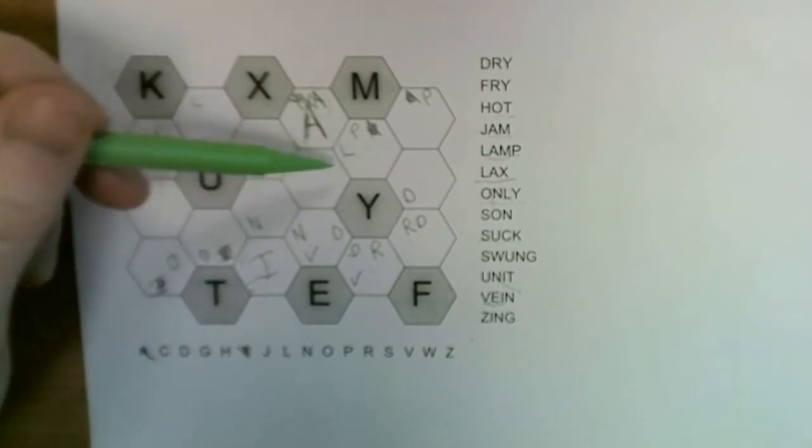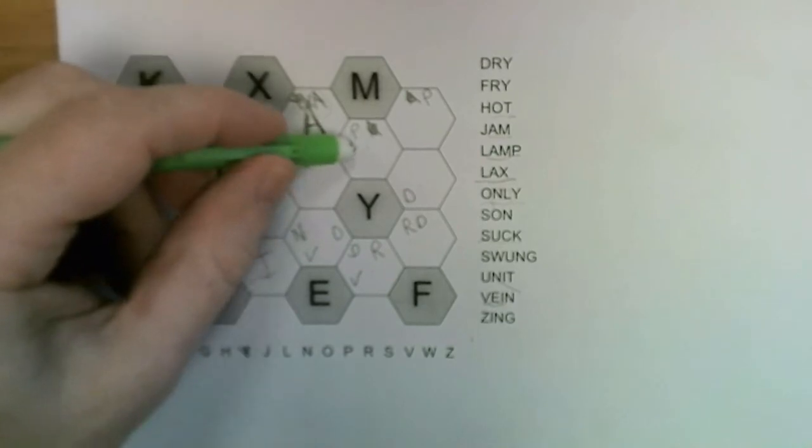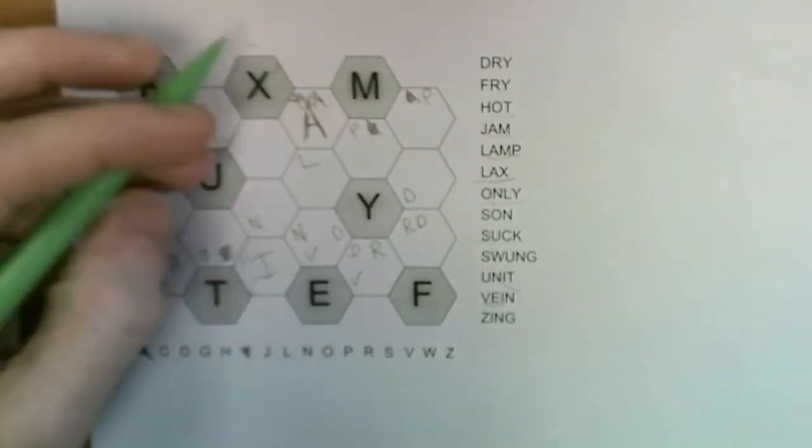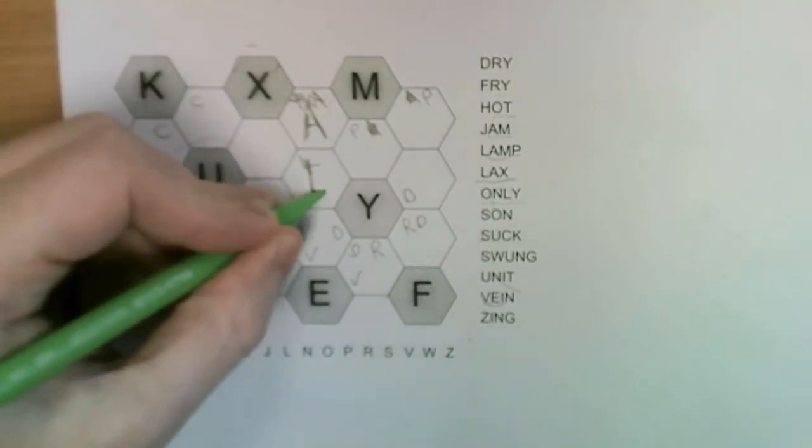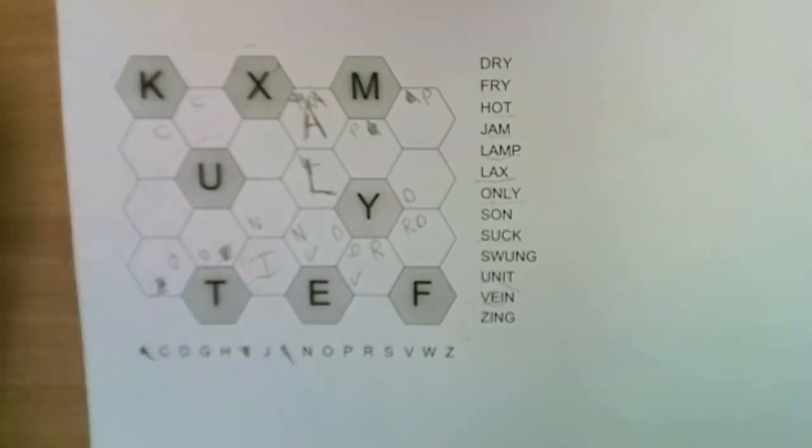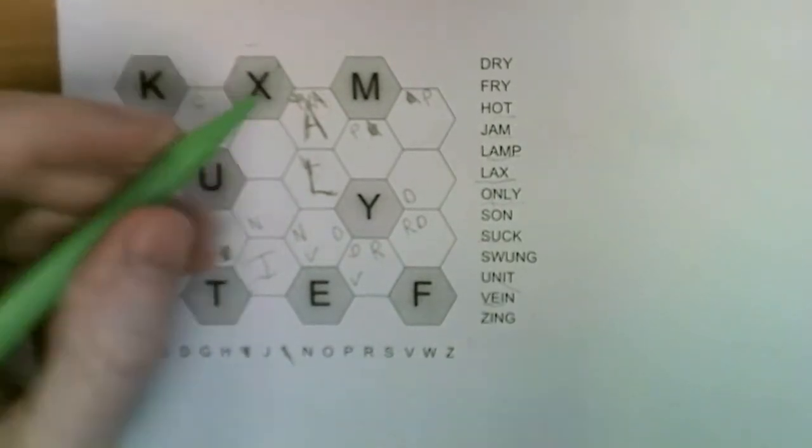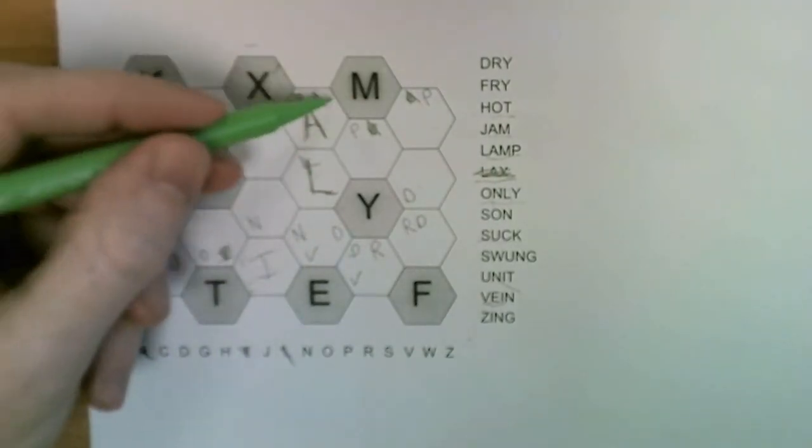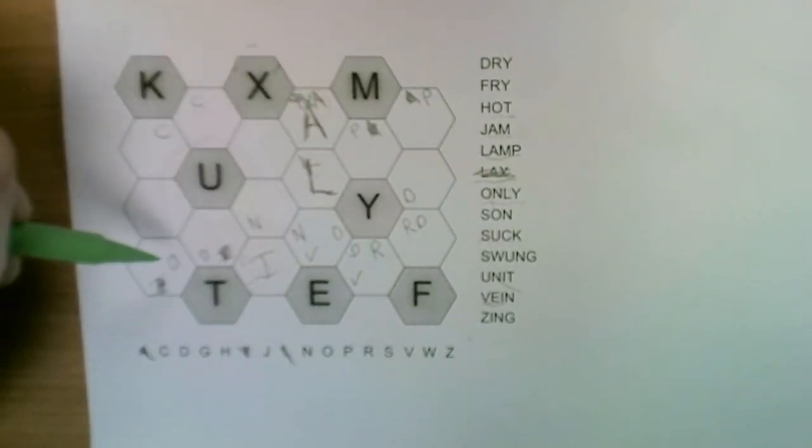Since the N has to neighbor the L, this also can't be the L. Since we marked in all the possible locations for the L, if that's not the L then this must be the L. That gives us LAX.